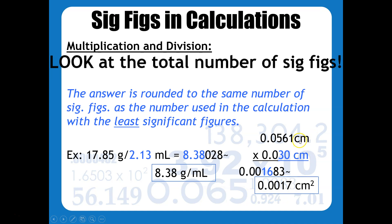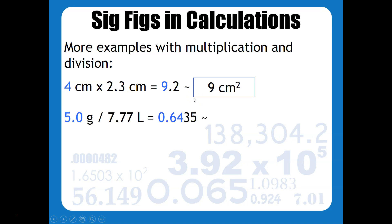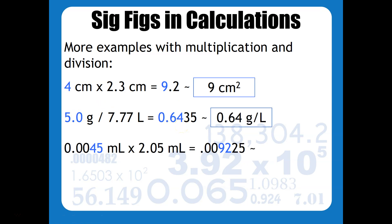Notice that this is multiplication, so whenever you take a unit times a unit, that unit is going to be squared — just like in algebra: x times x is x squared. So in the calculation 4 cm × 2.3 cm, this has one sig fig and this has two, so the answer can only have one. For the next one, we've got two sig figs here and three here, so the answer can only have two. And for this one we're multiplying — these are leading zeros, so there are only two sig figs here and three here, so the answer can only have two, and that's why it's milliliters squared.